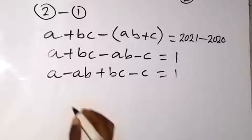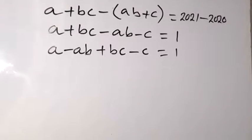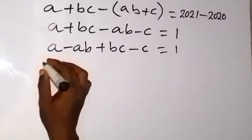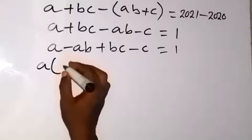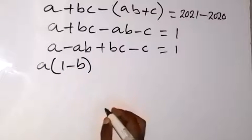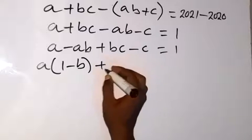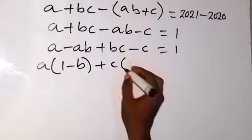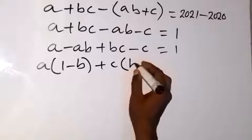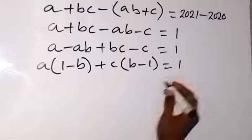Then when we factor what is common, we group them two by two and factor what is common. We have A is common here, we bring it out, so we have 1 minus B. Then also what is common here is C, so we have plus C into bracket B minus 1 equals to 1.